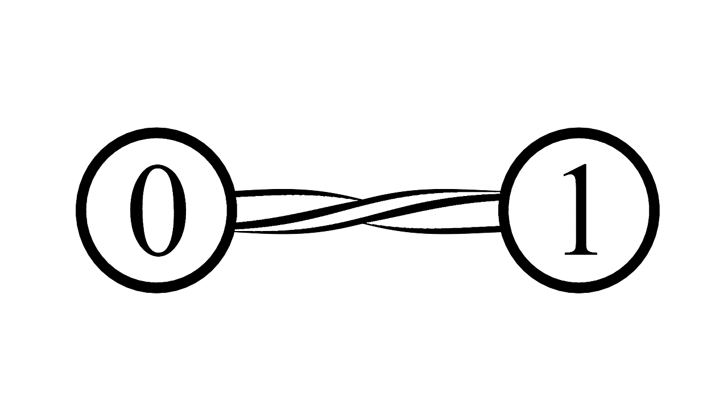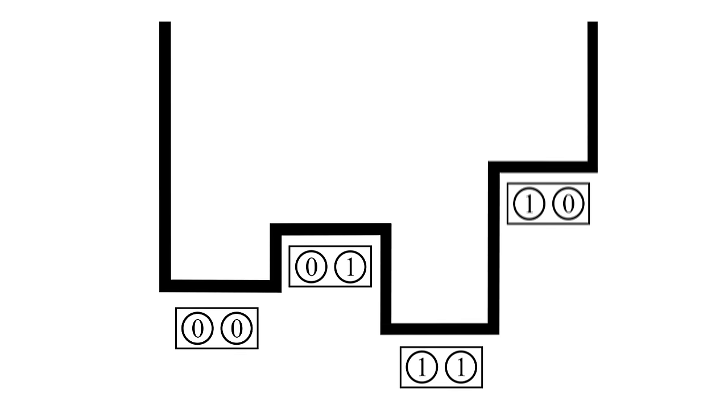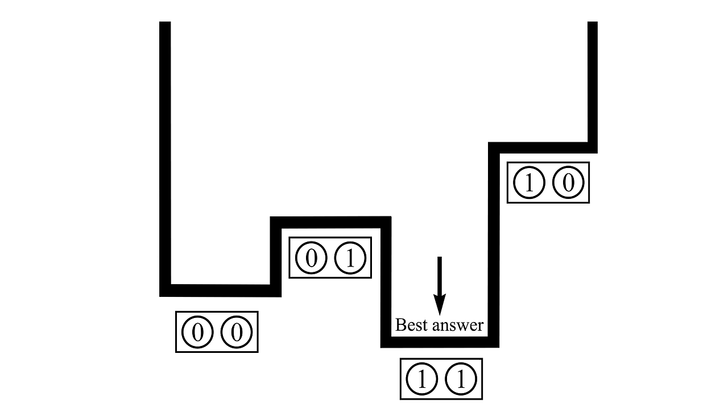When you've got a coupling between two qubits you're now using another phenomenon in quantum physics called entanglement. When two qubits are entangled they have to be considered as a single object which has four states, so you can imagine a potential with four states, each one corresponding to a different combination of the two qubits.